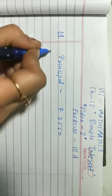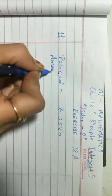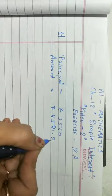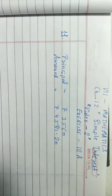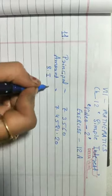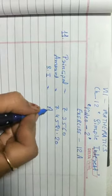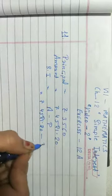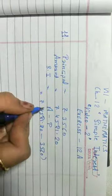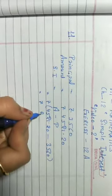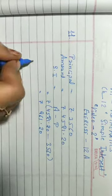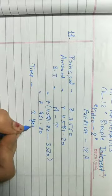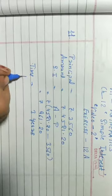Principal is rupees 3560 and amount is rupees 4521.20. First we will find SI, which is amount minus principal, that is equal to rupees 961.20. Time is given as 3 years.